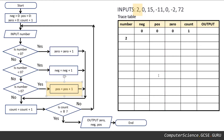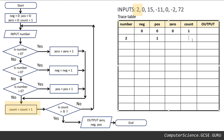We come to our next process: the pos variable equals itself plus one. It's currently zero, so zero plus one is one. Following the flowchart through, the count variable equals itself plus one. Count is currently one, so one plus one is two.